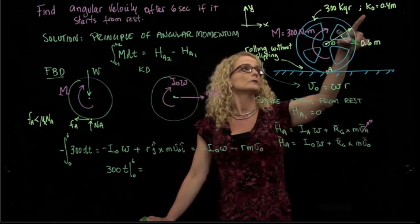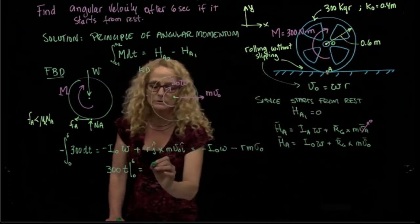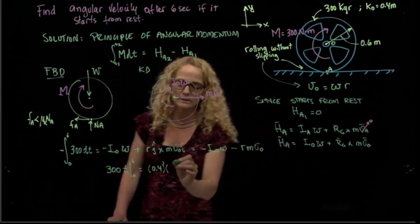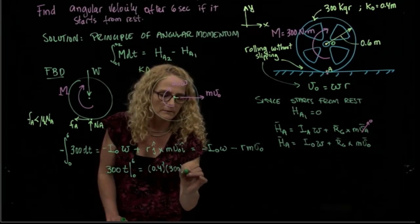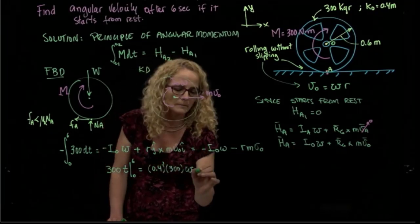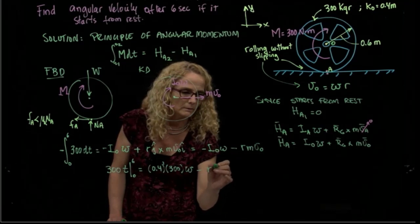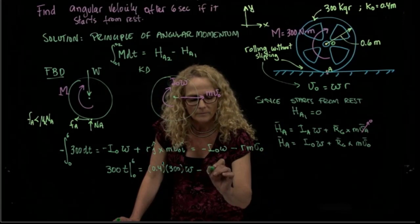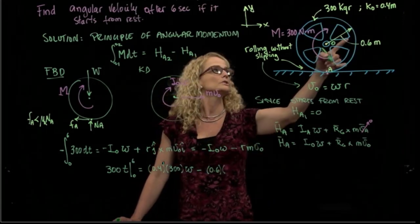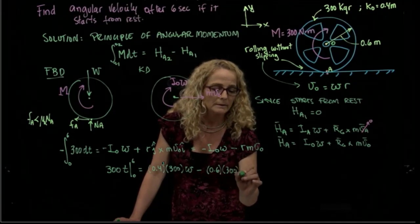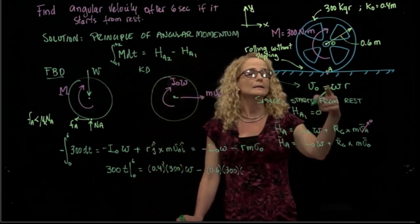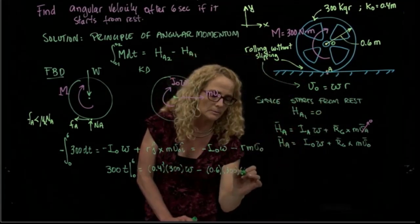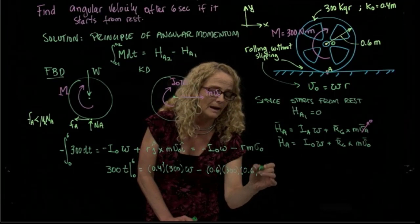That equals the mass moment of inertia, which can be calculated from the radius of gyration. So that will be 0.4 squared times mass, and the mass is 300 kilograms, times the velocity minus R, which is actually 0.6, times the mass, which is again 300 kilograms, times the velocity. And I already said that the velocity is related to the rotation because it's rolling without slipping, so it will be 0.6 again times omega.